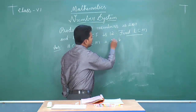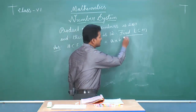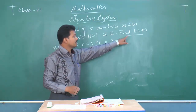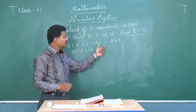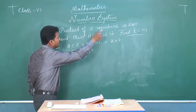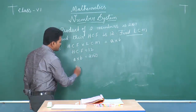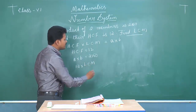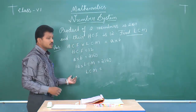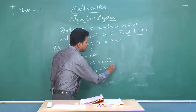Let A and B be the two numbers. In this question, we know the value of HCF, which is 12. We do not know the LCM — we are going to find it. They are given the product of the two numbers: A into B is 2160. Substituting the values and transposing: 12 into LCM equals 2160. Therefore, LCM equals 2160 divided by 12.